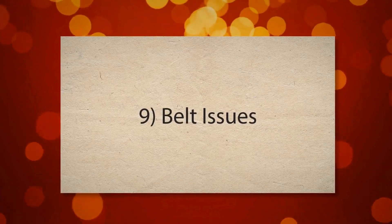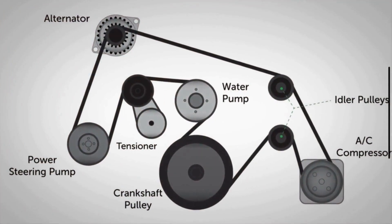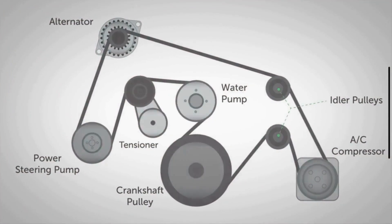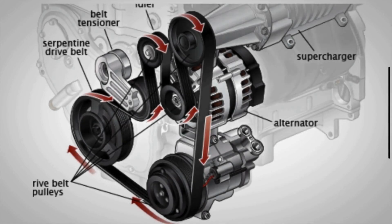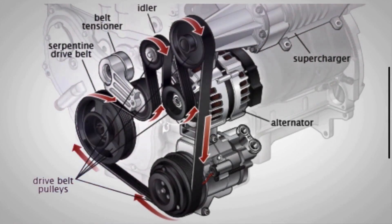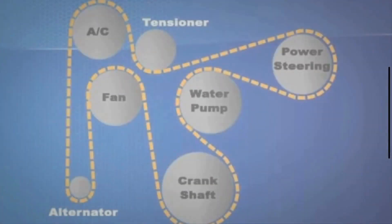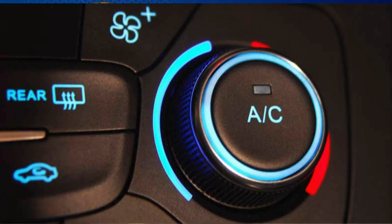9. Belt Issues. The serpentine belt of your vehicle drives the AC compressor and other accessories. If the belt is worn or loose, it can slip or fail to properly drive the compressor. This causes uneven engine operation and causes the engine to shake when the AC is activated.